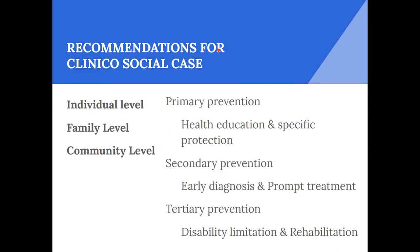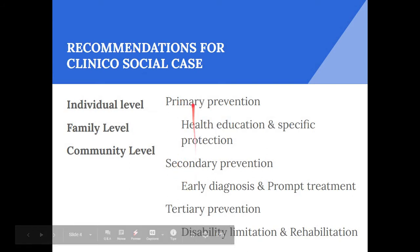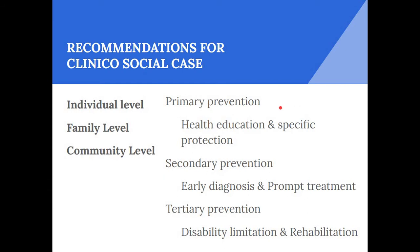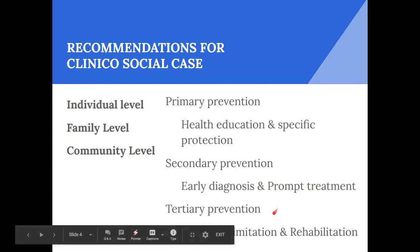Before writing recommendations for a clinical social case, keep in mind that recommendations are given at the individual, family, and community levels. Also important are the levels of prevention: primary prevention includes health education and specific protection using population and high-risk strategies; secondary prevention involves early diagnosis and prompt treatment; and tertiary prevention involves disability limitation and rehabilitation.